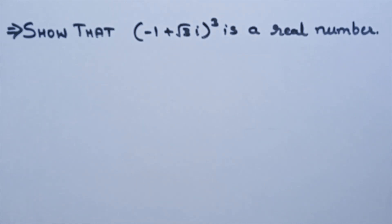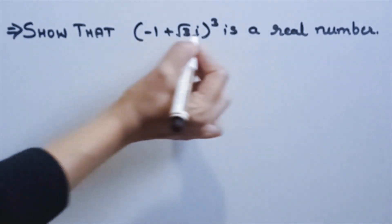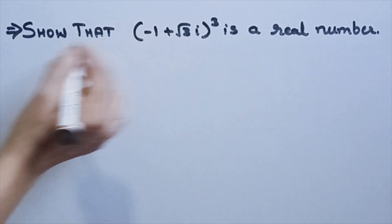The first example: we have to show that (-1 + √3i)³ is a real number. So first we are going to use the (a + b)³ formula here.